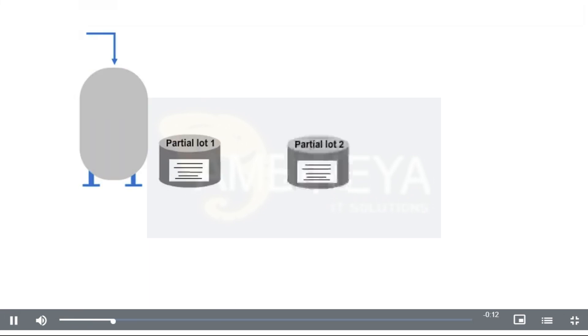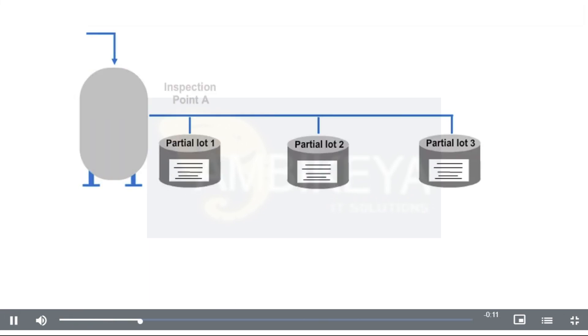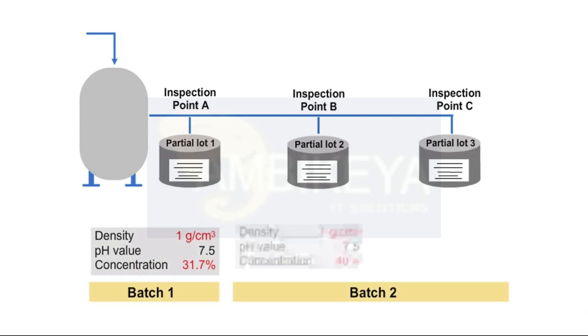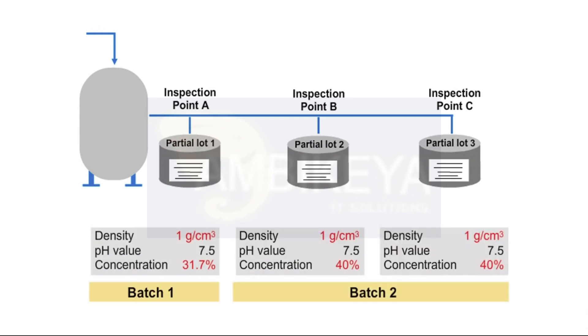You can create partial lots based on the confirmation of the results for inspection points. You can assign these partial lots to batches. You can either create a new batch for this assignment, or use an existing one.